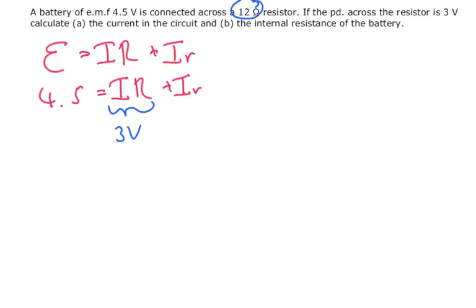So we can actually work out the current using this part. So I times 12 equals 3. Therefore the current is equal to 3 over 12, which is equal to 0.25 amps.